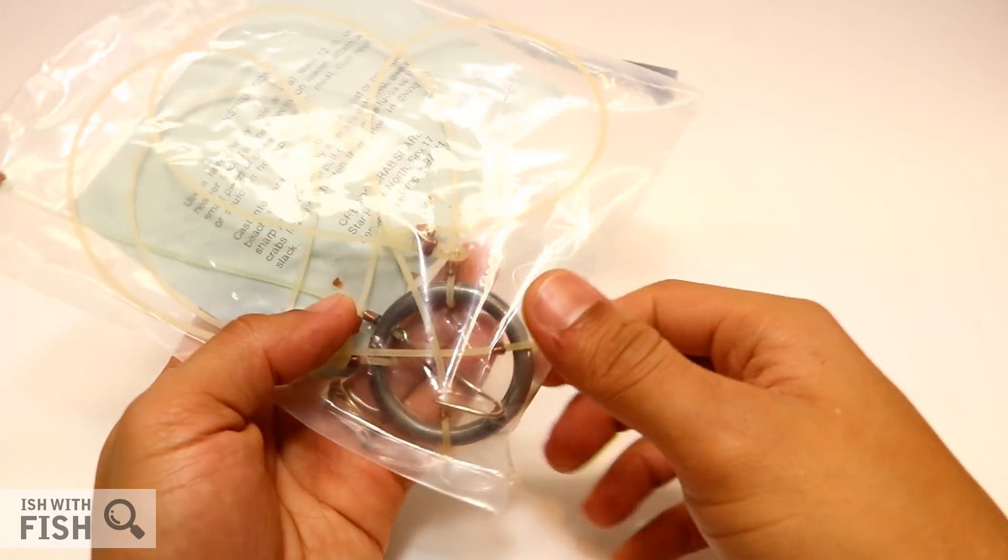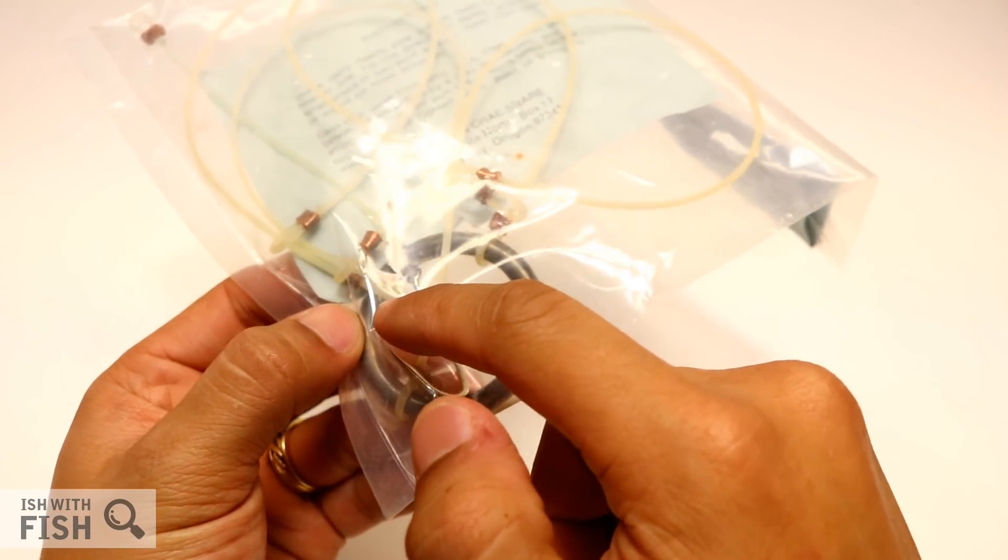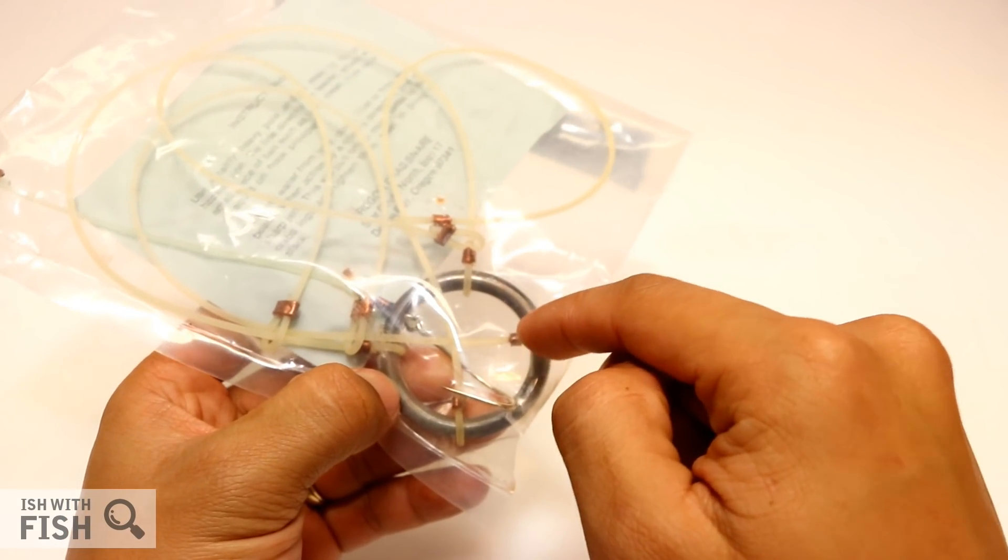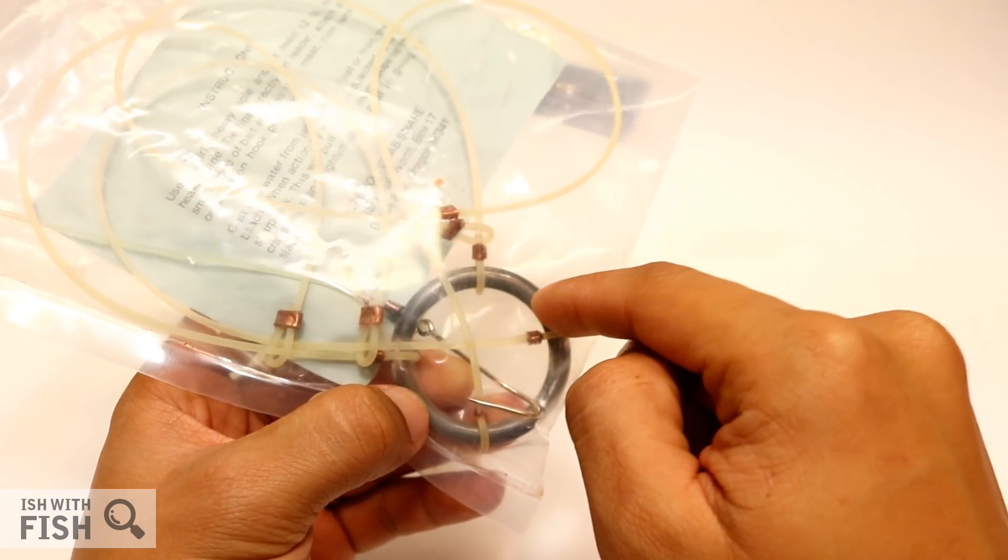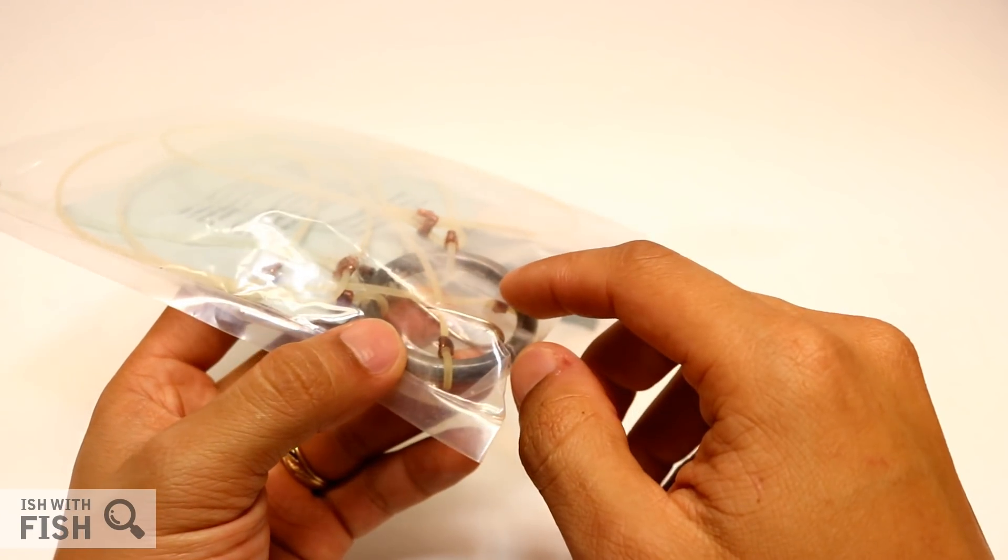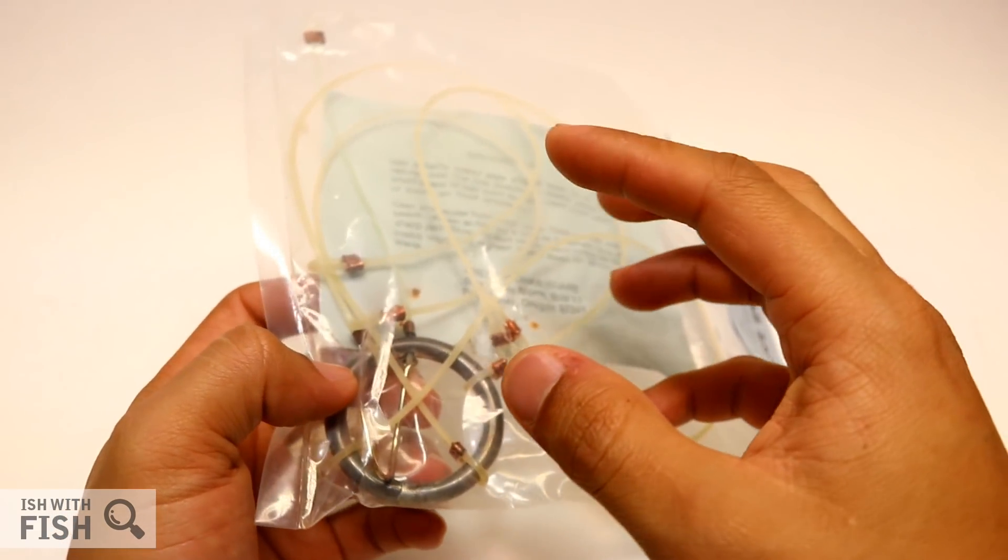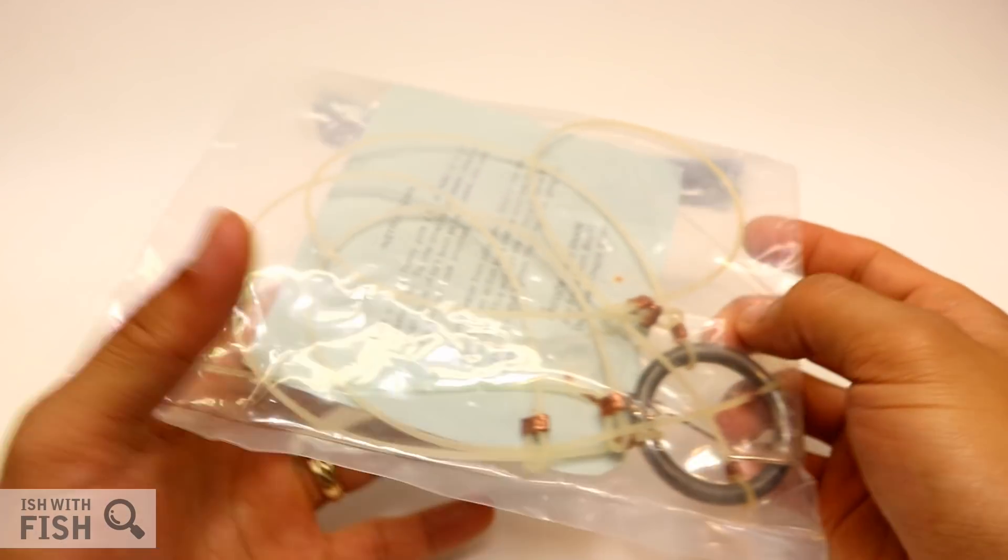This is a much simpler approach to that design. It consists of a simple metal ring with only four loops attached. In California, the maximum amount of loops is six, so I could actually add two to this, but this one only has four. It has a bait holder hook that pins the bait to the center and keeps the crabs interested while they get tangled up in the loops.